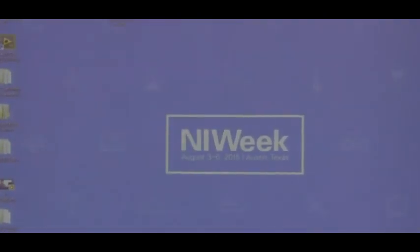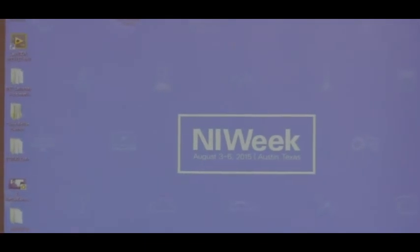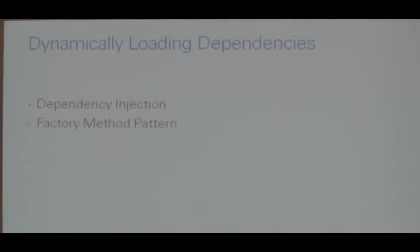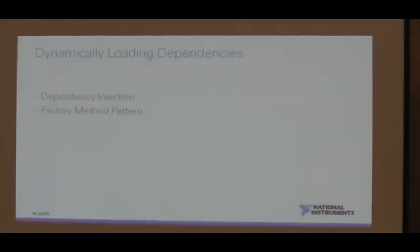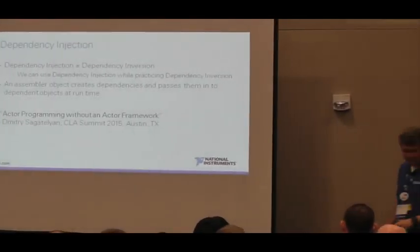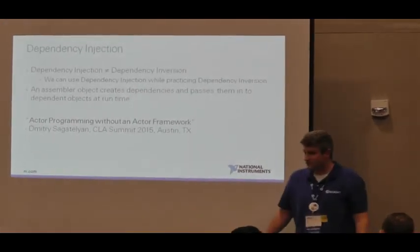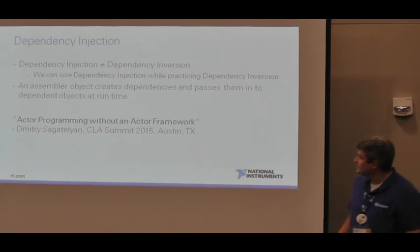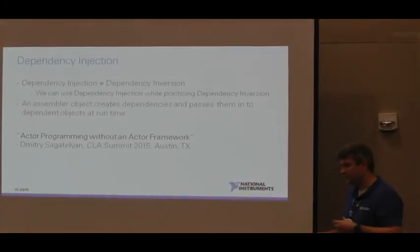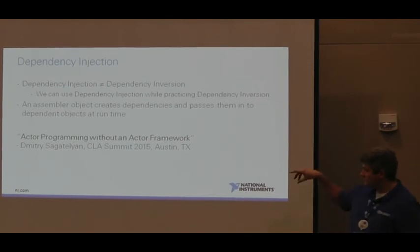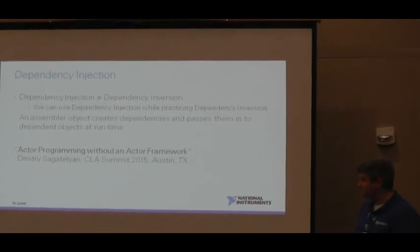Now they are decoupled because we're able to invert those dependencies. A quick note: dependency injection is not dependency inversion. A lot of times you hear those two terms used interchangeably but they're different ideas. We can use dependency injection while practicing dependency inversion to get our concrete classes inside to override the abstractions at runtime. A similar object creates the dependencies and passes them into the dependent objects. Dimitri has done a few really good presentations on dependency injection in general.